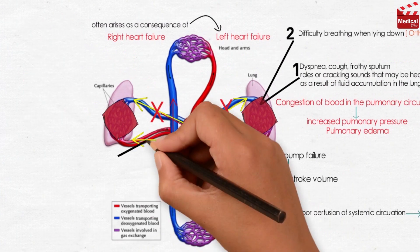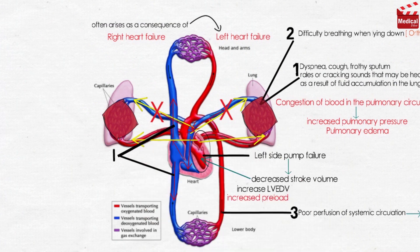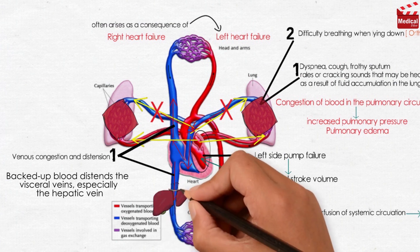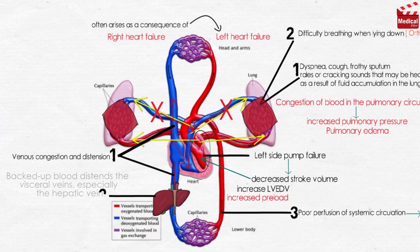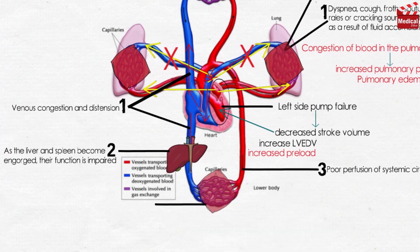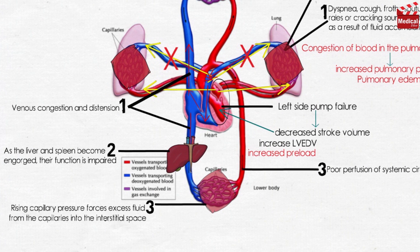Increased right ventricular workload causes venous congestion and distension. Backed-up blood distends the visceral veins, especially the hepatic vein. As the liver and spleen become engorged, their function is impaired. Rising capillary pressure forces excess fluid from the capillaries into the interstitial space, causing edema, weight gain, and nocturia.